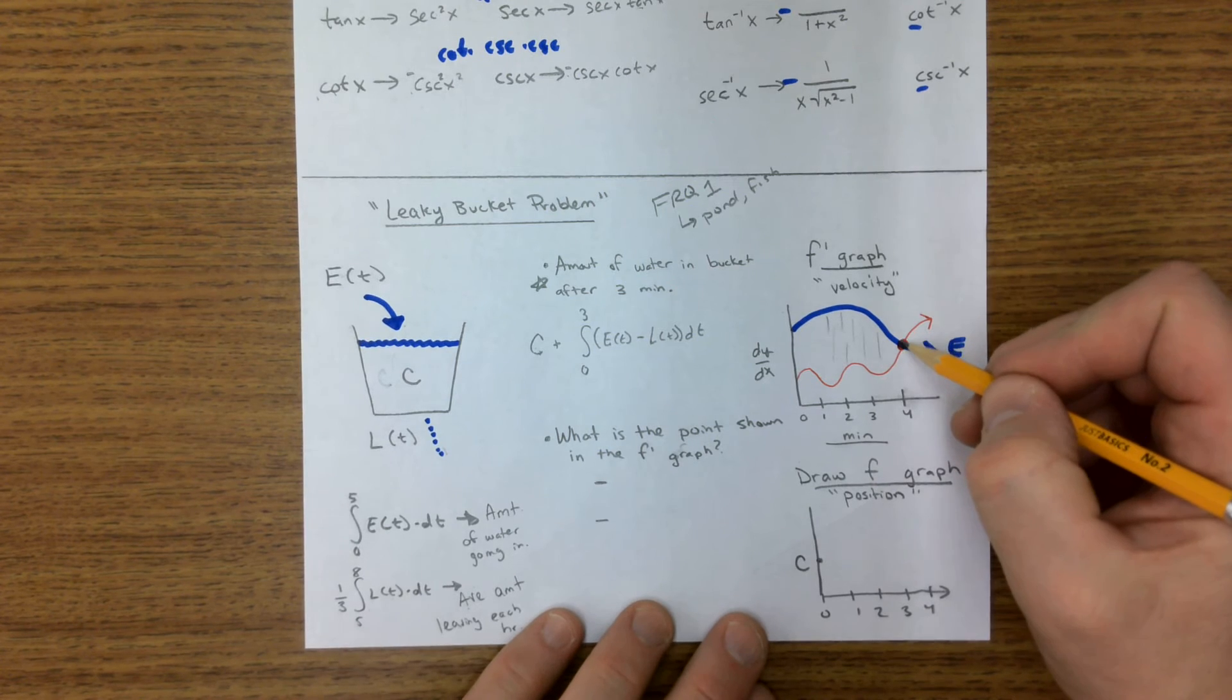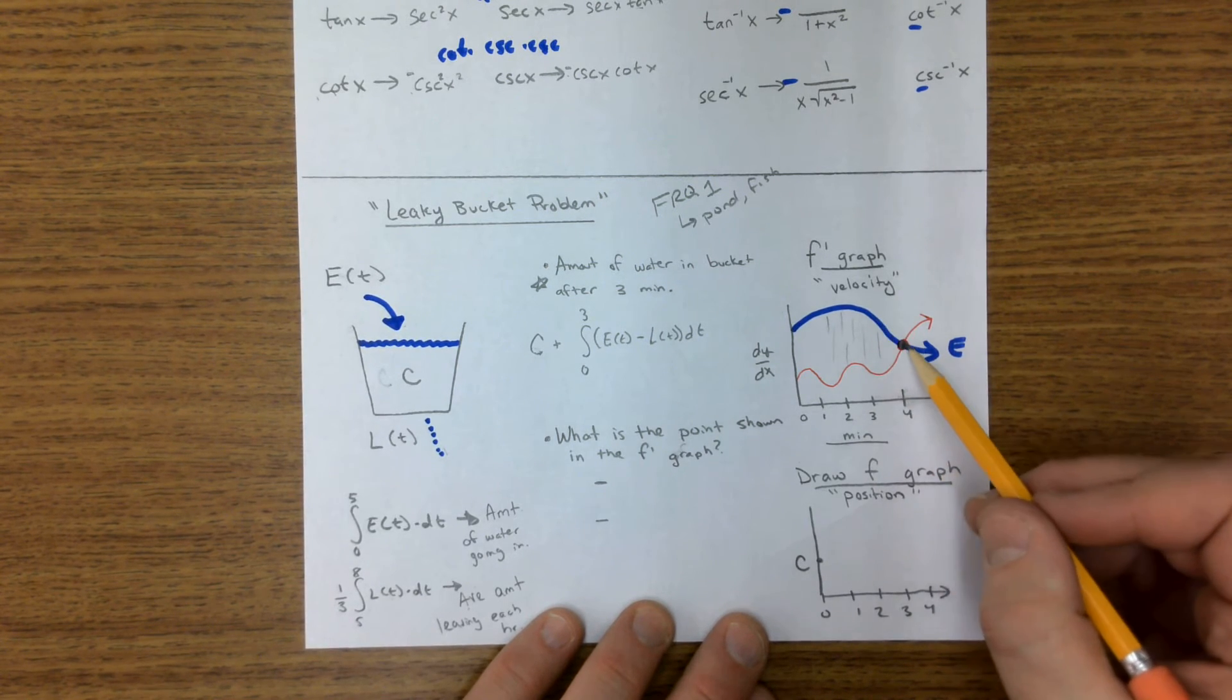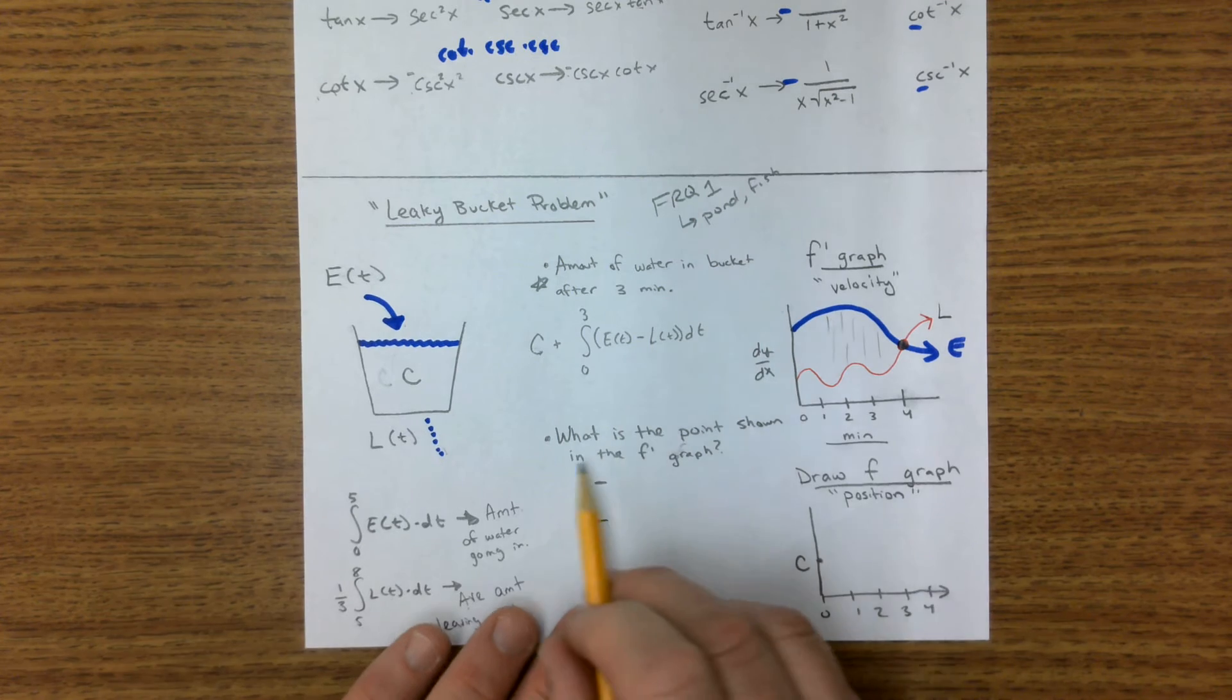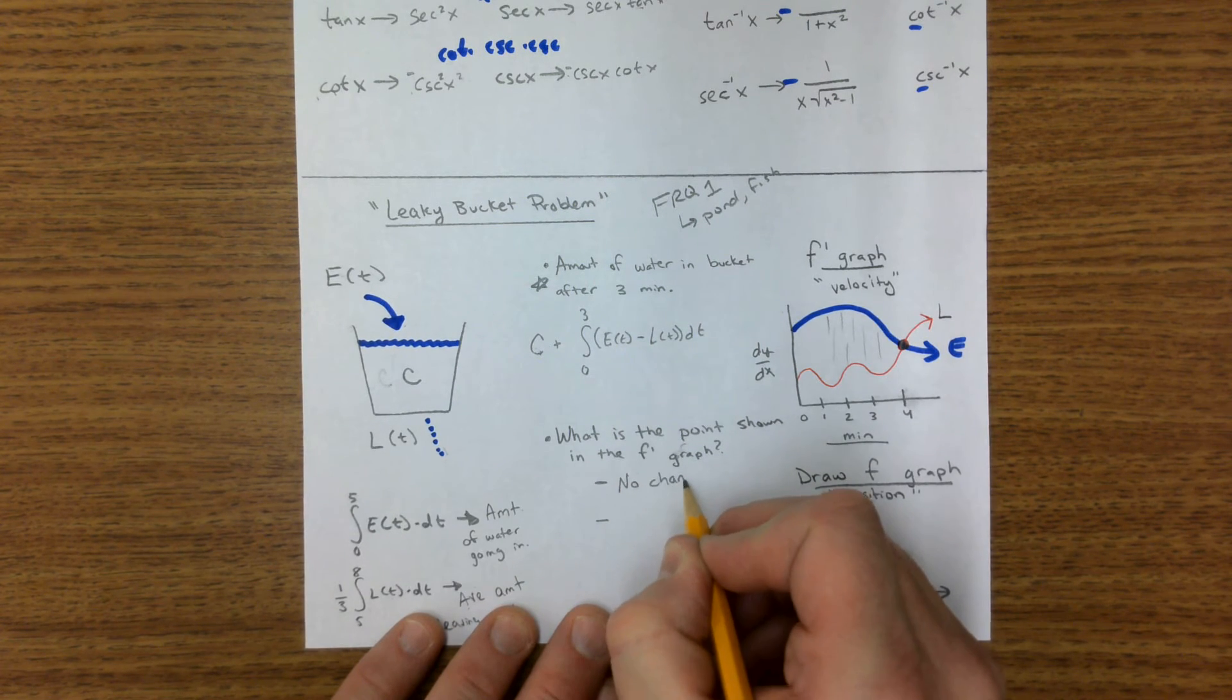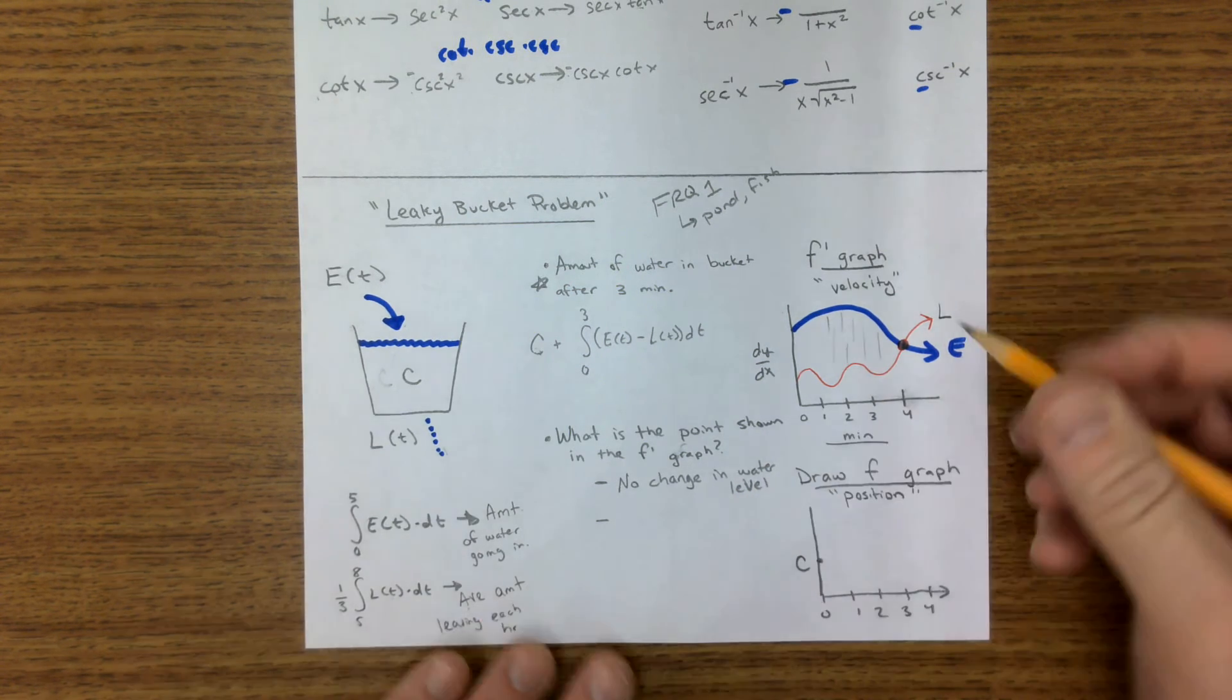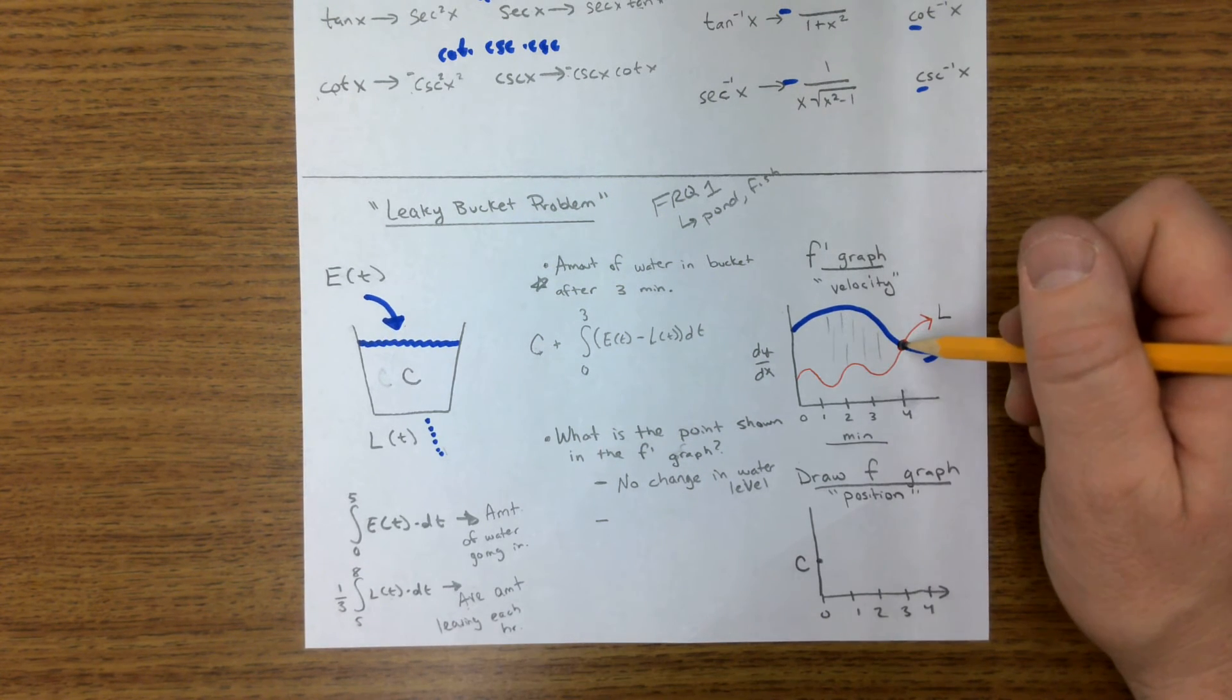But there comes to this point right here where the amount of water entering is equal to the amount of water leaving. So what is that point? Well, two things. That's where there's no change. There's no change in the water level, right? Because you have water coming in, water going out at the exact same rate. There's no change right there.